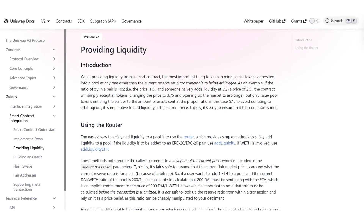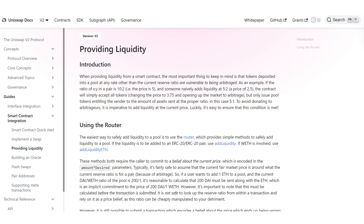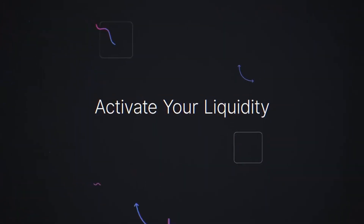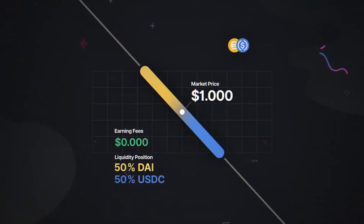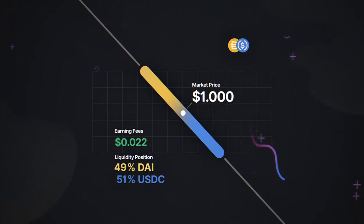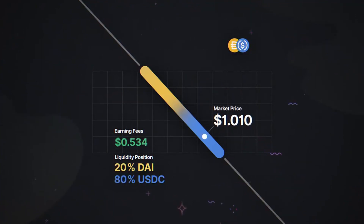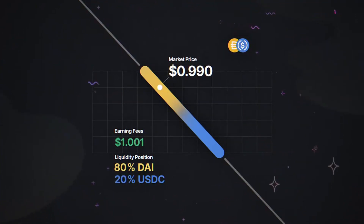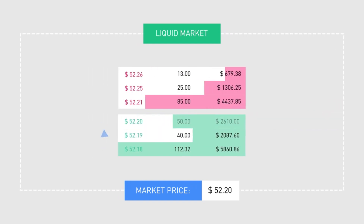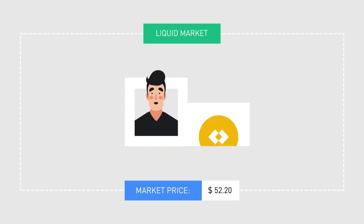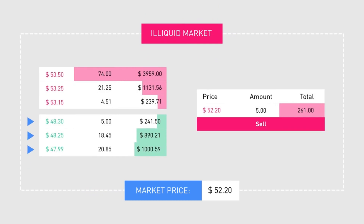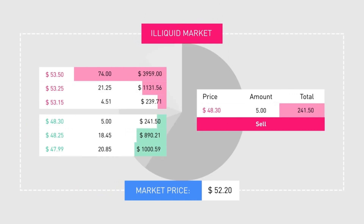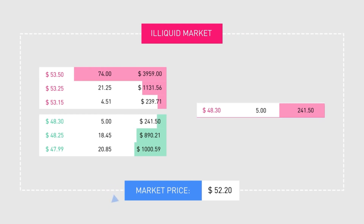Now we come to the liquidity protocol, which solves one of the fundamental issues with centralized exchanges. Liquidity refers to the ease with which particular assets can be bought and sold in real time, and it's crucial to facilitating speedy and cost-effective trades. With centralized platforms, the number and size of requests on the order book constantly vary. During periods of low liquidity, traders may not be able to fulfill their buy or sell orders in time.